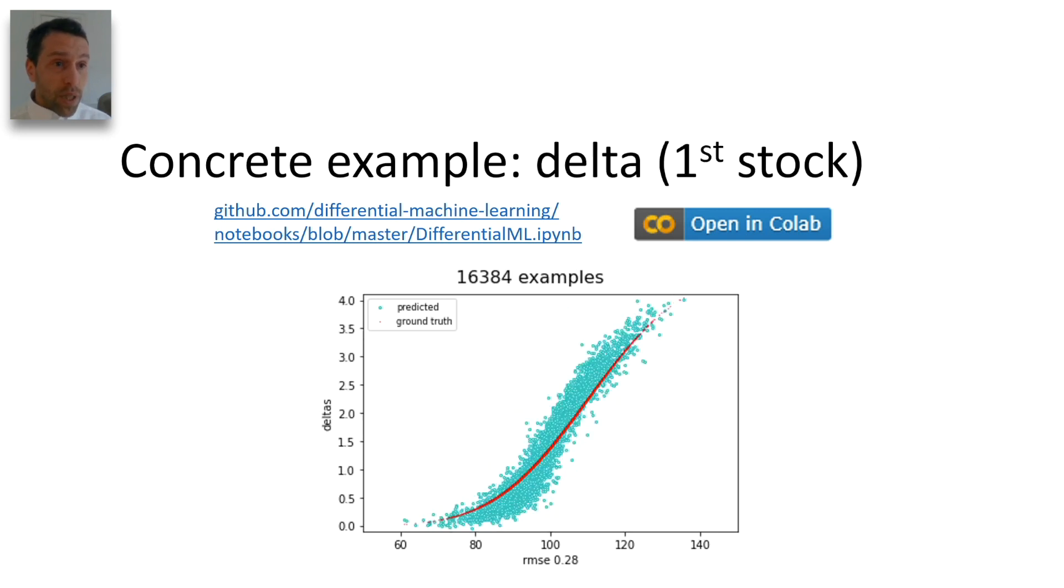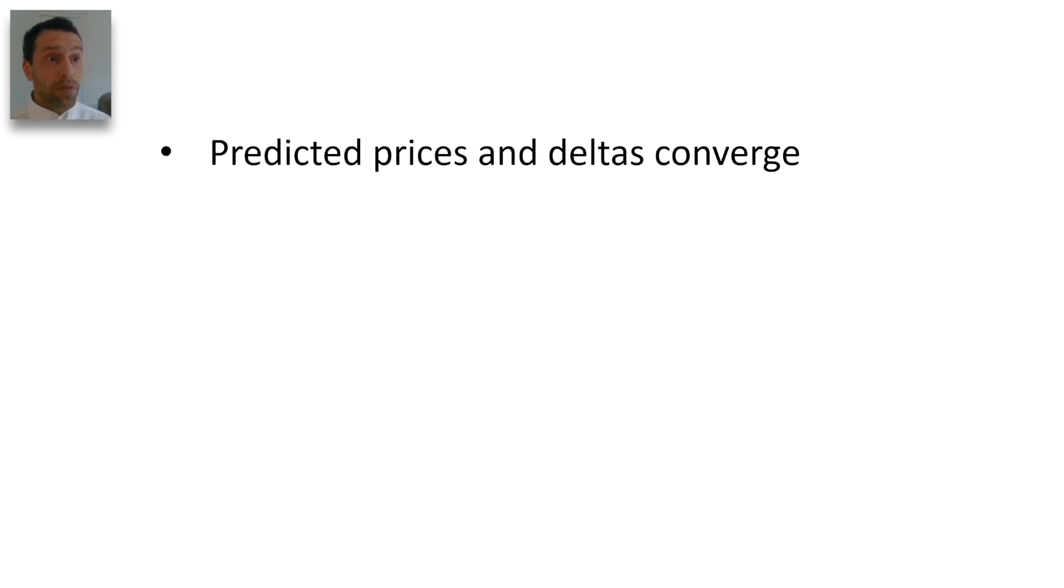Predicted deltas follow the same pattern, but converge a lot slower. The network struggles to learn the shape of a pricing function from punctual examples.